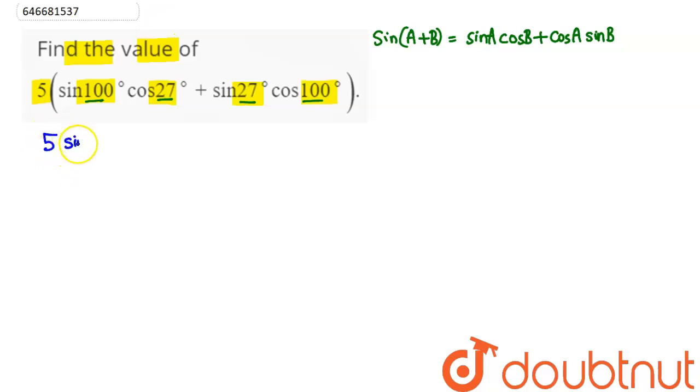that is 100 plus 27 degree. So this here comes out to be 5 sine of 127 degree, which here is equal to sine of 180 minus 53 degree, which is equal to...